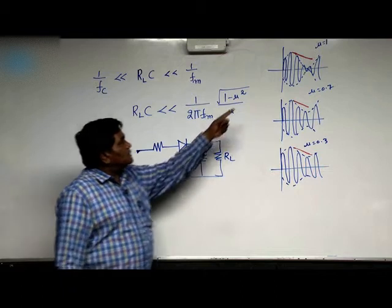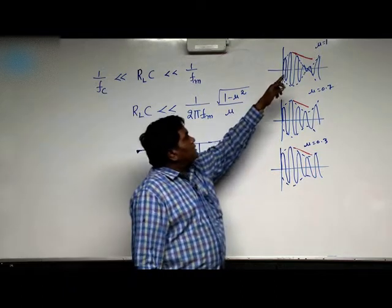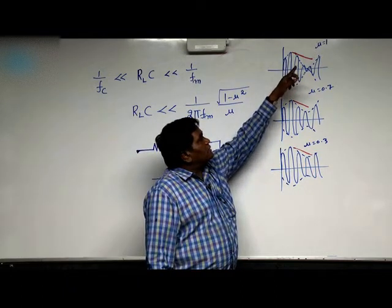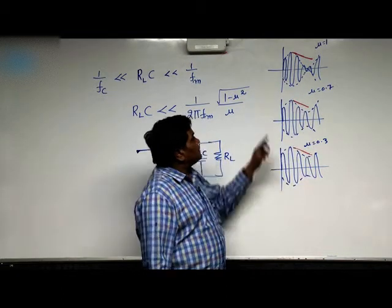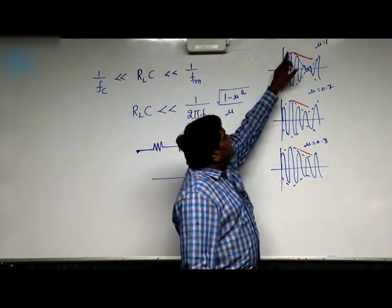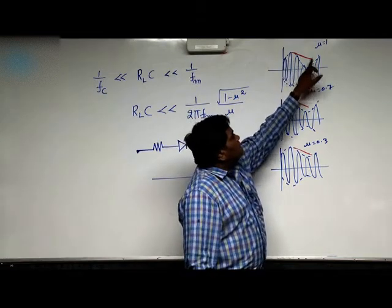Now see these waveforms. The parameter I changed is mu. First case mu equals 1, mu equals 0.7, and mu equals 0.3. The envelope of the carrier is nothing but the message signal.